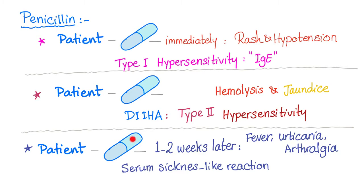Third and last scenario: patient takes penicillin, and one to two weeks later develops fever, urticaria or rash, and arthralgia or joint pain. That's a serum sickness-like reaction — similar to serum sickness in symptoms but quite different. There are two differences: serum sickness is a type 3 hypersensitivity reaction, but serum sickness-like reaction has an unknown mechanism. Also, serum sickness has immune complexes present, but in serum sickness-like reaction, no immune complexes are found. All of this is high yield for your exam.